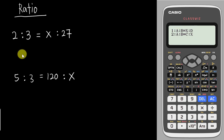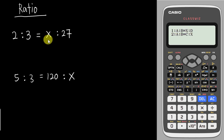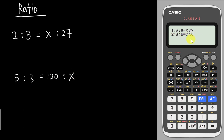For the first example: the ratio is 2:3, then X:27. Because X is at this position, this is Pattern 1. For the second example: 5:3 = 120:X. X is the value you want to find here, so this is Pattern 2. I will teach you how to solve manually first and then how to use the calculator.